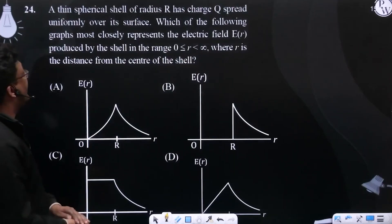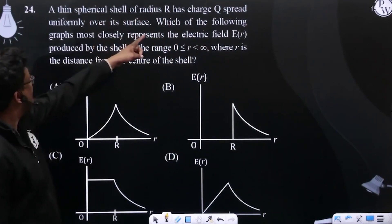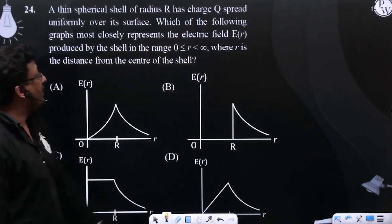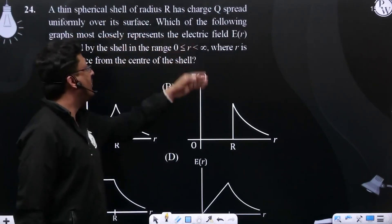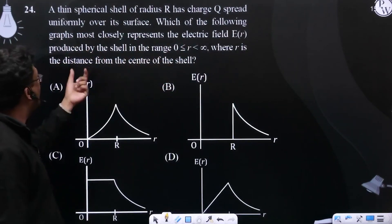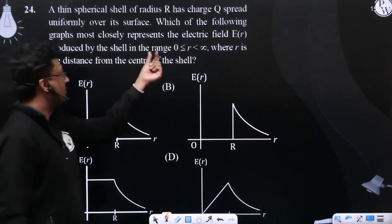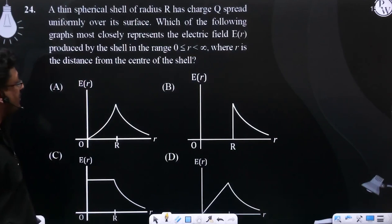A thin spherical shell of radius capital R has charge capital Q spread uniformly over its surface. Which of the following graphs most closely represents the electric field E(r) produced by the shell in the range 0 ≤ r < ∞, where r is the distance from the center of the shell?